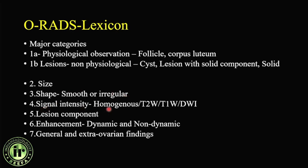Signal intensity is described as homogeneous or heterogeneous — homogeneous means same intensity throughout, heterogeneous means mixed intensity. They have described T2, T1, and diffusion criteria for when to call something hyperintense or hypointense. Then assess the lesion component: how much is solid, whether to call it completely solid or solid-cystic. Enhancement must be evaluated in two ways — dynamic and non-dynamic — with dynamic being the more important of the two.